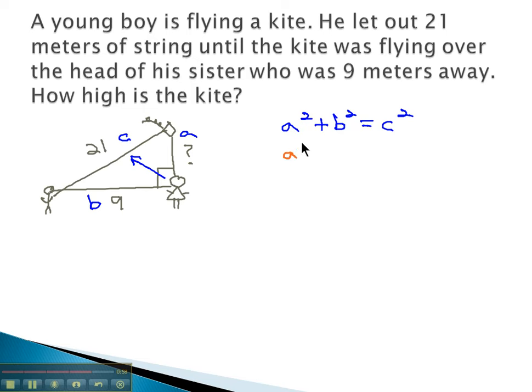A, we said we don't know, plus b, which is 9 meters, squared equals c, which is 21 meters squared. Simplifying first, doing the exponents, we get a squared plus 81 meters squared equals 21 squared is 441 square meters.